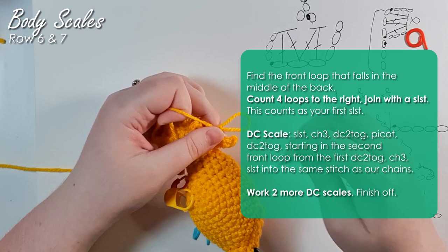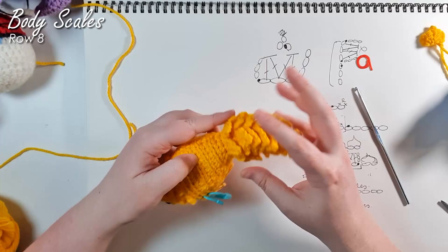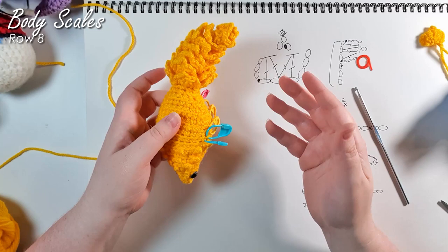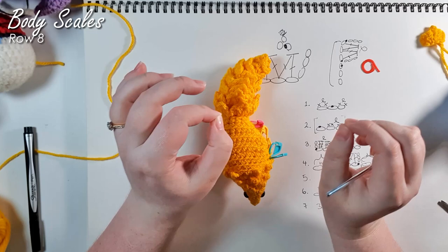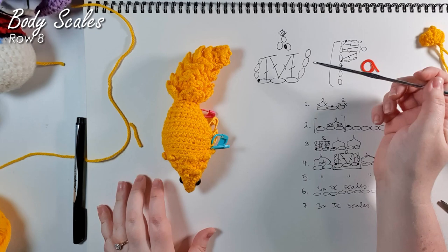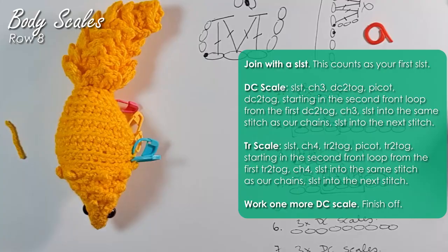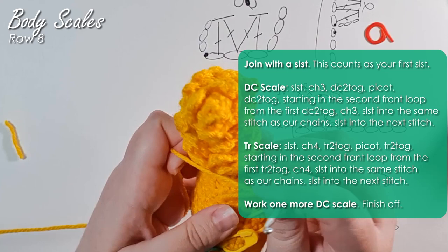So there are seven rows of scales making up his majestic tail with its nice little swoosh. We are now heading into the body and have six rows of scales to go. For row eight of the scales, we are going to work the biggest scale of them all — there is only one of them in the entire pattern and it is a triple crochet scale. It's essentially the same as a double crochet scale; you just chain four at the start and end, and do triple crochets instead of double crochets. So the next row is: double crochet scale, triple crochet scale, double crochet scale.